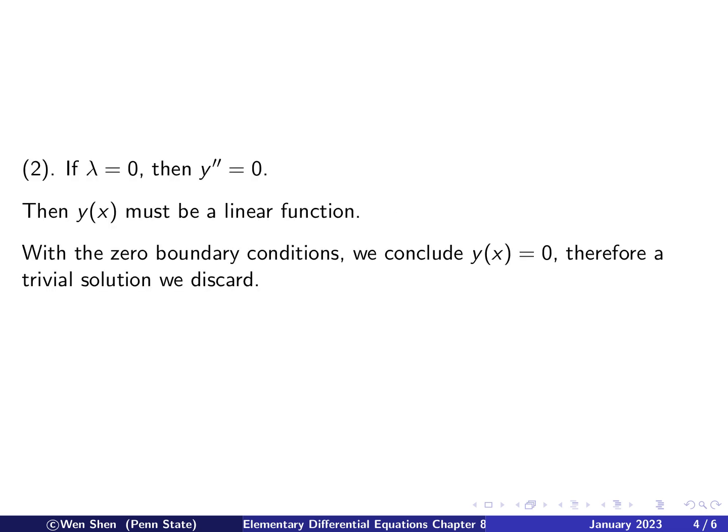So the second situation is when lambda is 0. Then the equation becomes y'' = 0. So if a function's second derivative is 0, then we know it's a linear function, and the graph of it must be a straight line. Then with the zero boundary conditions, at 0 and at L, it's 0, and you connect those two points, then you see that the solution is identically 0. So again, this is a trivial solution, and we discard it.